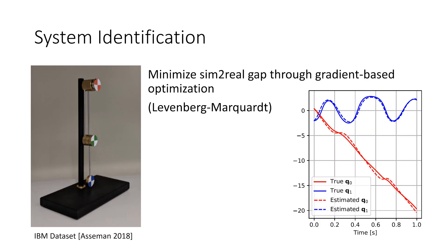We present experiments on real-world SysID problems, using gradient-based optimization to estimate the initial velocities, link lengths, and inertial properties of a chaotic double-pendulum system.